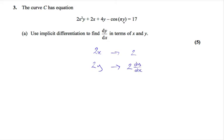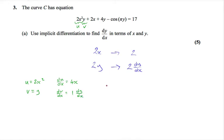Differentiating each of these terms one by one: the first term we have to use the product rule, where we let u = 2x² and v = y. Differentiating u: du/dx gives us 4x. For dv/dx, we use implicit differentiation — we differentiate normally to get 1, but then add dy/dx. In the product rule, the derivative of u times v is v(du/dx) + u(dv/dx), so that gives y times 4x, plus 2x² times dy/dx.